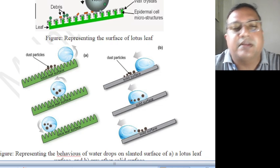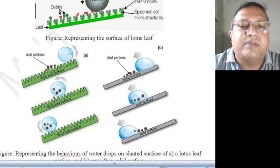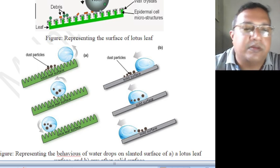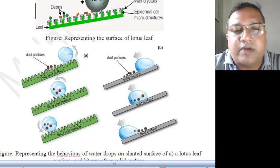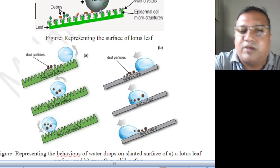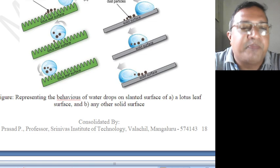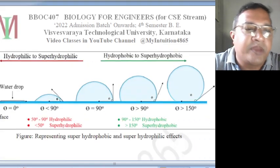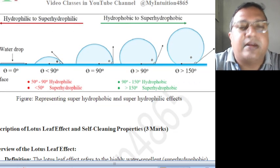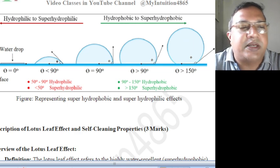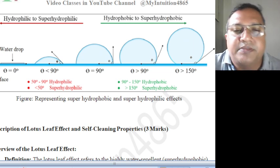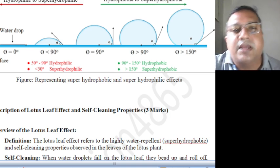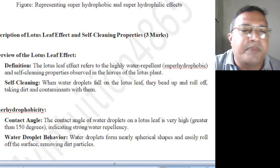If the surface does not have the wax-like crystalline hair-type structures, water will simply slide, leaving the material behind — only the water goes, nothing else. Because of the hair-like structures, the contact angle increases above 90 degrees, and the contact angle goes above 150 degrees, making it a superhydrophobic effect.